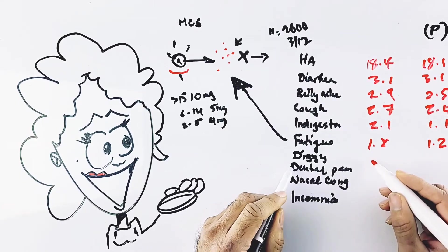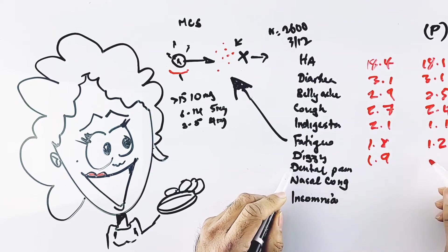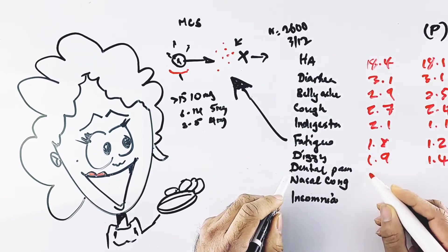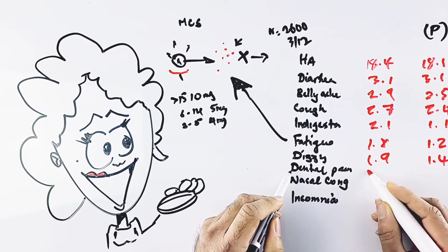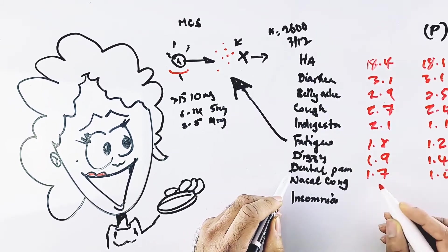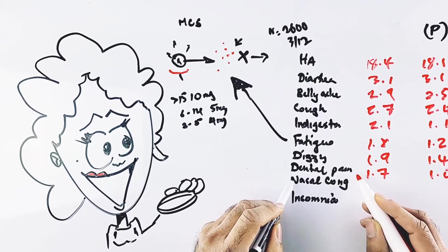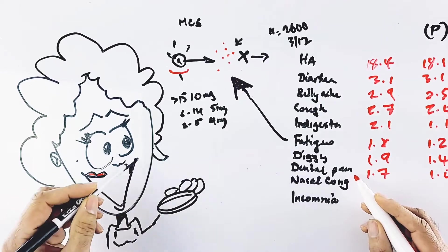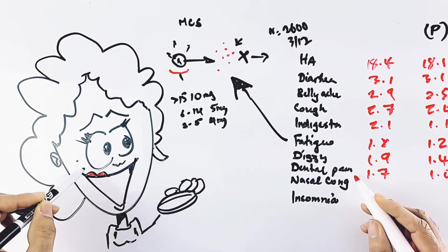The next most common side effects: dizziness at 1.9% versus 1.4% on placebo. Then dental pain at 1.7% versus 1%. You might find that odd—why